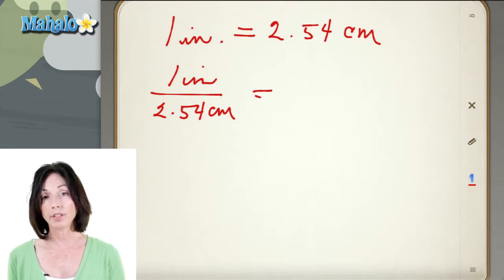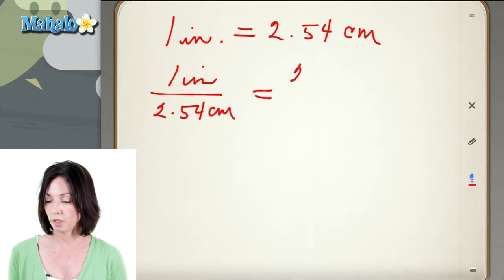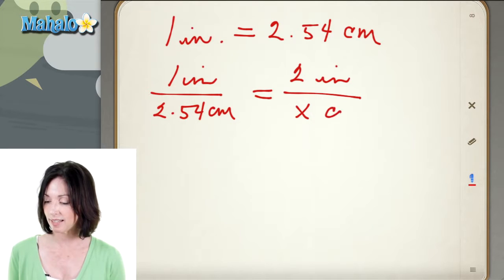And then on the other side I'm going to have the thing I want to convert, which is my 2 inches. And I want to convert it into centimeters. I don't know how many centimeters that is yet. That's what I'm going to figure out. So we have x centimeters on the bottom.